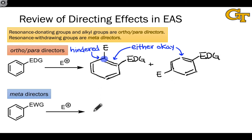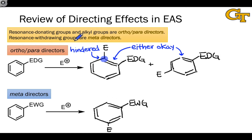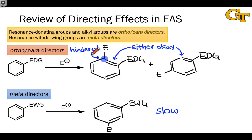Groups that are electron-withdrawing direct substitution to positions that are meta to themselves. One important point with meta directors is that from a rate perspective, they tend to slow the reaction down because they're withdrawing electron density from the ring, and the ring behaves as a nucleophile in these reactions. Ortho-para directors, on the other hand, tend to accelerate electrophilic aromatic substitution reactions by donating electron density to the ring.